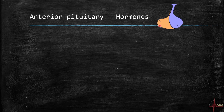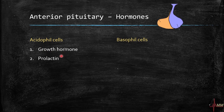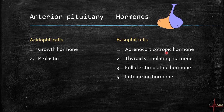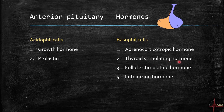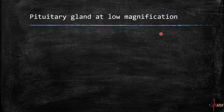The six major hormones secreted from the anterior pituitary come from the acidophil and basophil cells. Acidophil cells secrete growth hormone and prolactin. Basophil cells secrete four major hormones: ACTH (adrenocorticotrophic hormone), TSH (thyroid stimulating hormone), FSH (follicle stimulating hormone), and LH (luteinizing hormone).